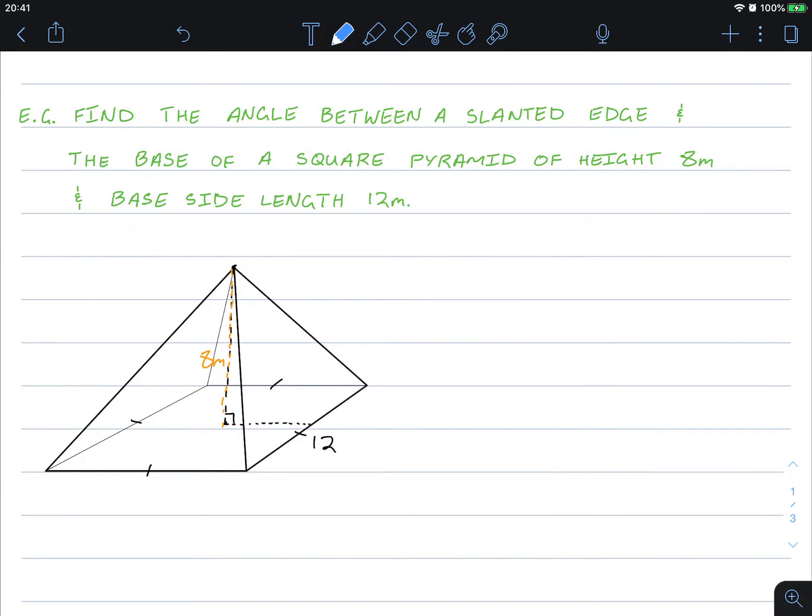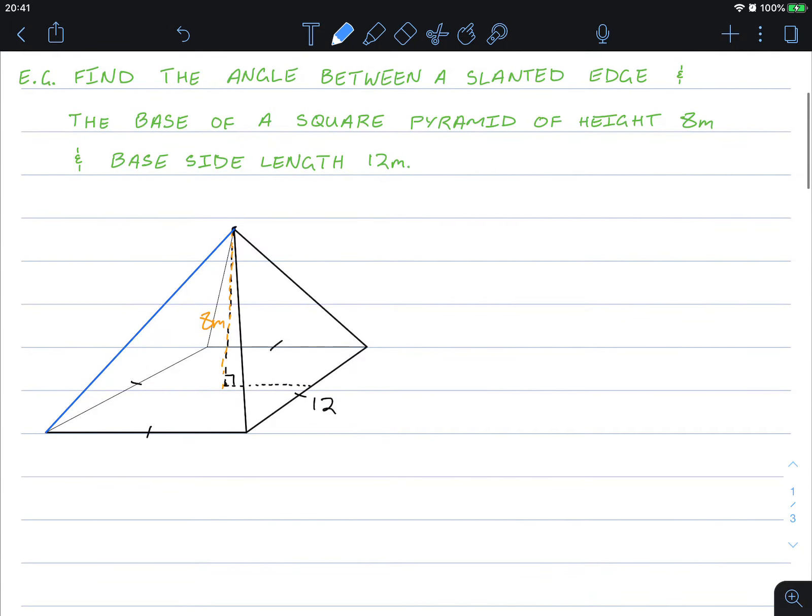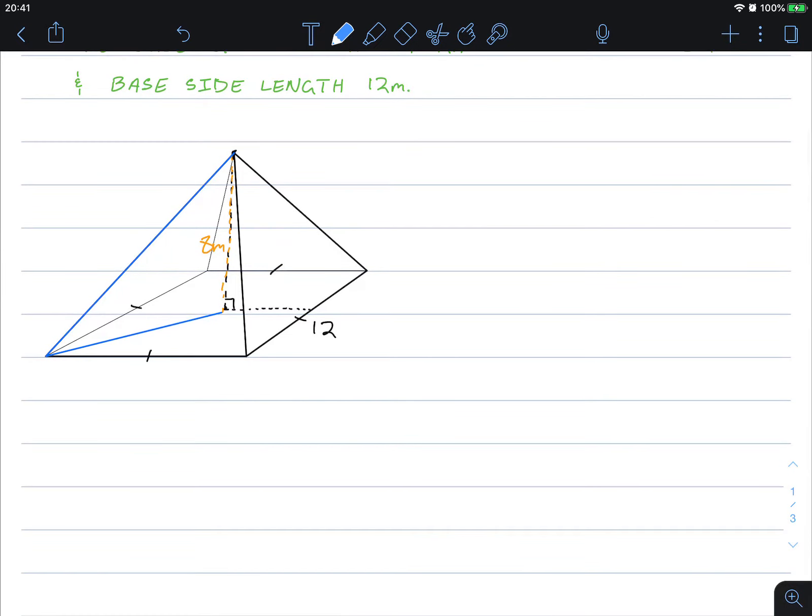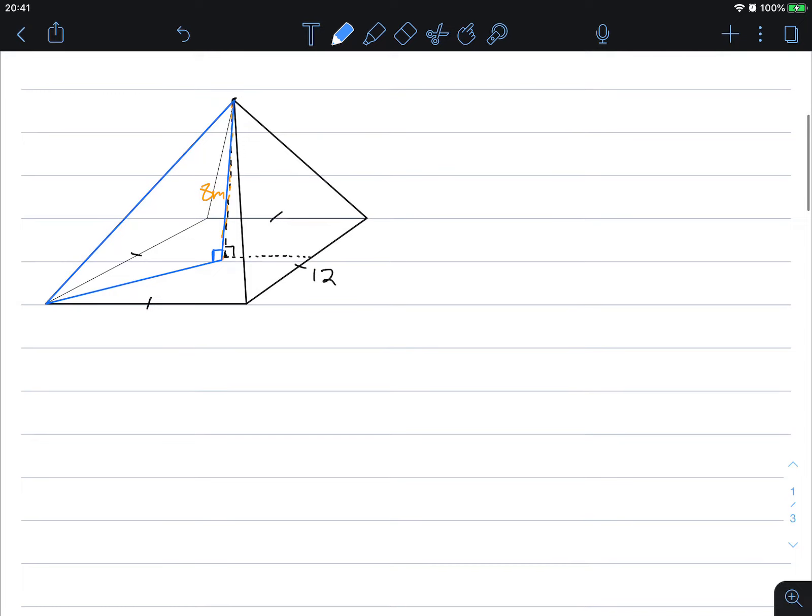So the angle we're looking for is between the slanted edge, so this edge here, and the base of the square pyramid. So we want this angle here. Let me draw this out so you can see it. So we have a 90 degree angle like that. And we want that angle there. So let me draw this out so we can see a little bit better. The triangle we're looking for is actually that triangle here. And that is the angle.